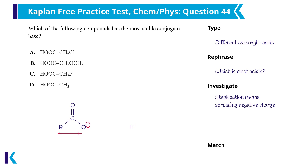The different groups on each answer choice molecule are different amounts of electron donating or withdrawing. To stabilize a conjugate base, we need to pull that electron cloud away, so this question could also be viewed as asking which is the most electron withdrawing substituent. In answer choice B, the ether group OCH3 is electron donating, so it will not be the right answer when two other answer choices are halogens. Simple acetic acid in answer choice D only has hydrogens on the alpha carbon, so it has no electron donating or withdrawing groups. Between A and C, fluorine pulls on electrons more than chlorine — it is the most electron withdrawing halogen, and the most stabilizing for the conjugate base, making C the correct answer.